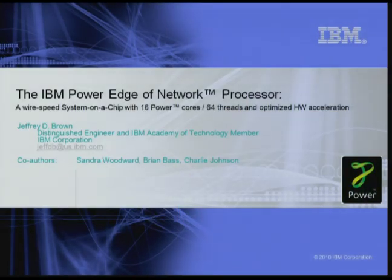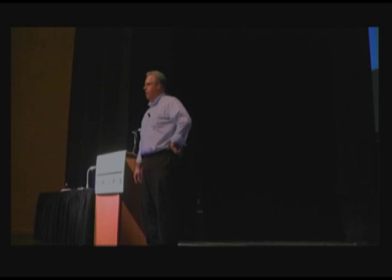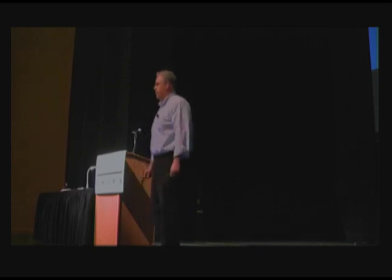I'd like to introduce our first speaker, Jeff Brown. He's a distinguished engineer from IBM Rochester in Minnesota, with extensive years of experience with server and games processors. Good afternoon. I'd like to thank the organizers for giving me an opportunity to share some of the work that my colleagues and I at IBM have done around a chip called the IBM Power Edge of Network Processor. I'd like to thank my co-authors Sandy Woodward, Charlie Johnson, and Brian Bass, as well as the extensive team within IBM that has been doing the development on this chip.